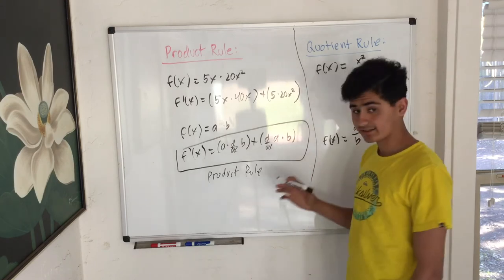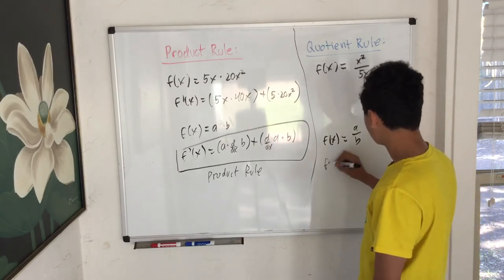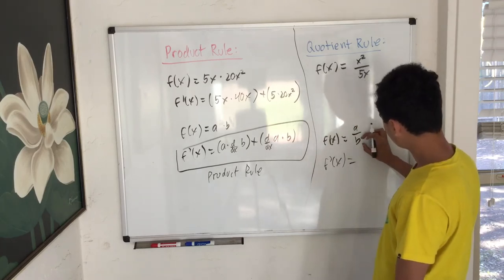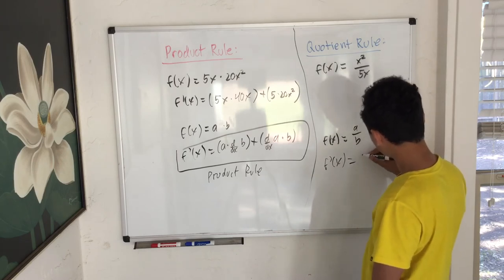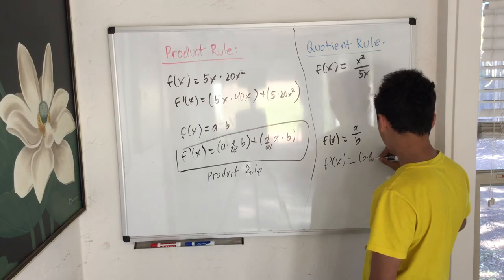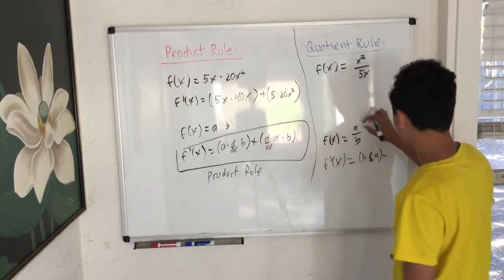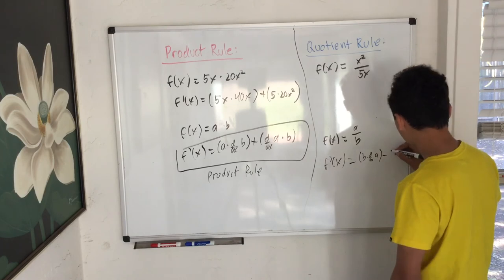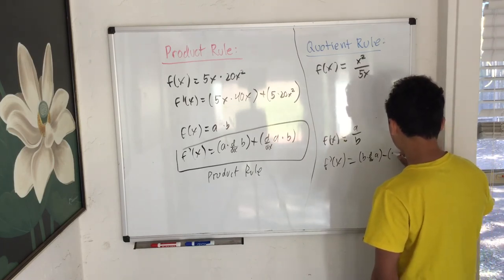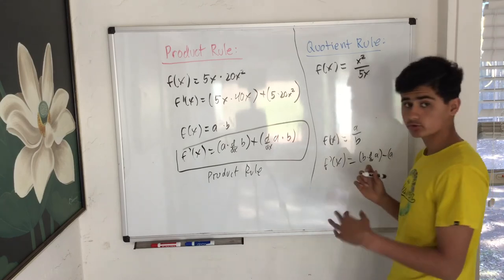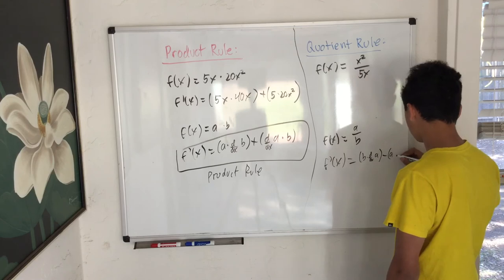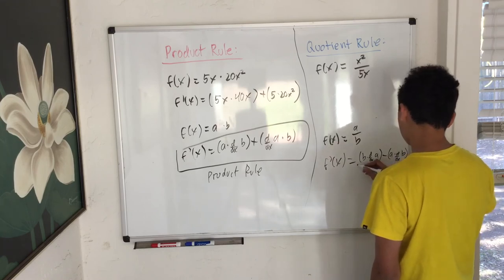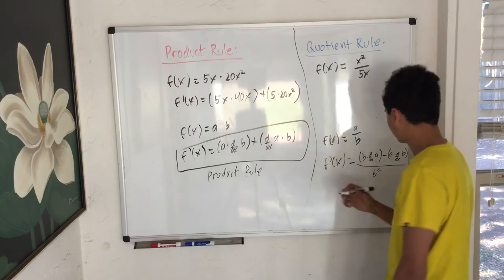But the way I'm going to say it is a much different way than I'm going to write it. So it's going to be f'(x) is equal to low d high, meaning the low times the derivative of high. So that would be b times d/dx of a, low d high, minus high d low. Again, same thing except you're taking the derivative of the bottom. So it's kind of the same fundamental here, except we have to find what the denominator is, too, minus high d low. So it's going to be a... And remember, you can't switch up this order, because it's specific with the subtraction. So minus high times d/dx, high d low, and then you square the bottom. So basically it would be b². And away you go.